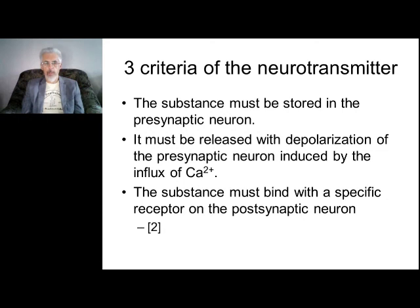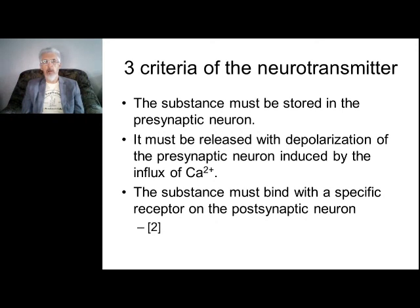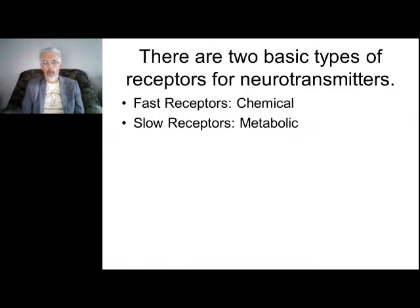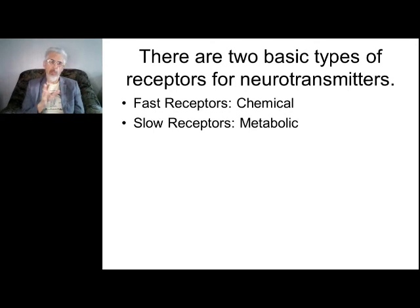Neurotransmitters are substances stored in the presynaptic neurons and released to bind to postsynaptic neurons. There are two types of receptors: fast receptors (ionotropic) and slow receptors (metabotropic). Fast receptors directly open ion channels when neurotransmitters bind, causing depolarization of the cell.